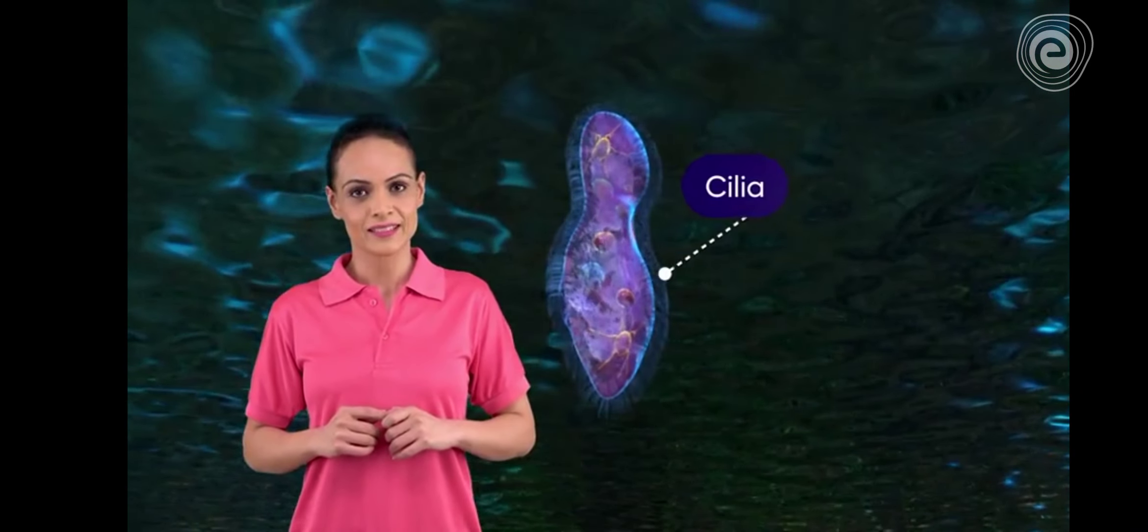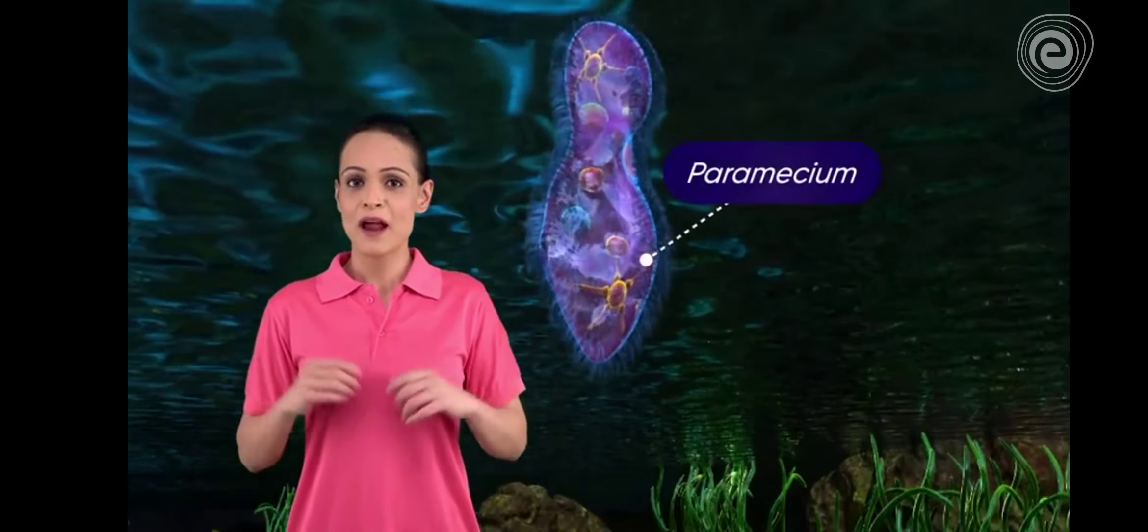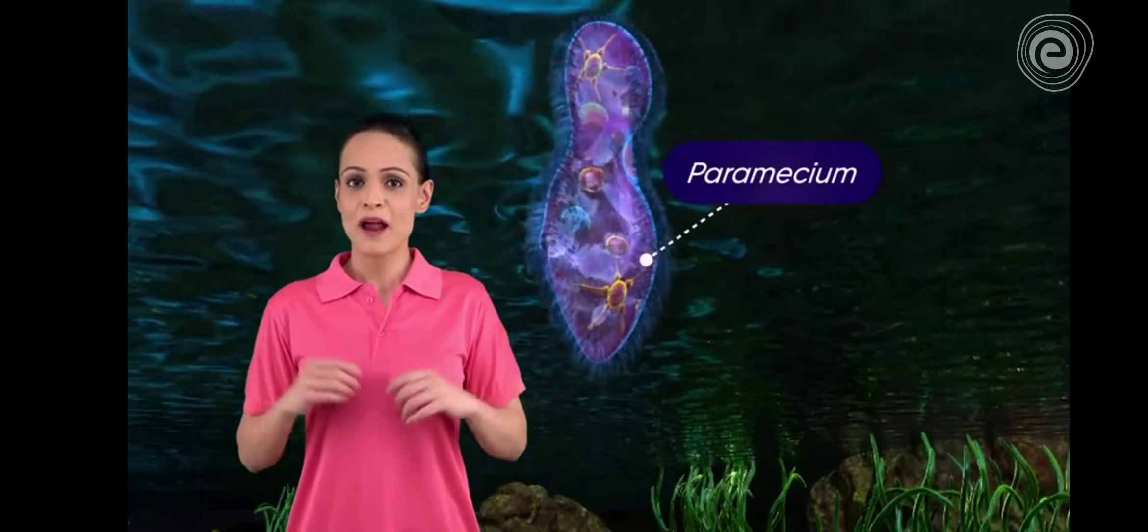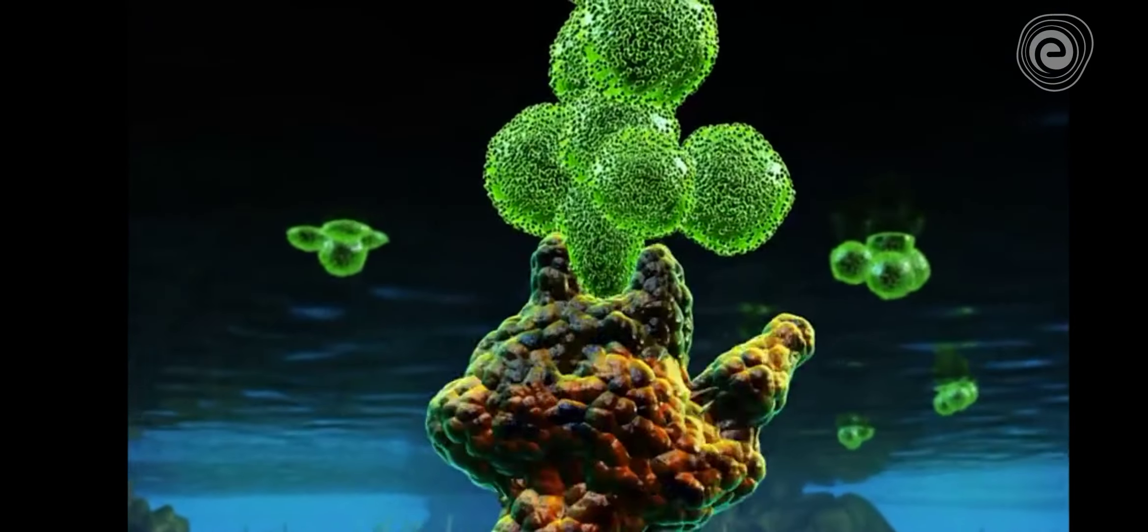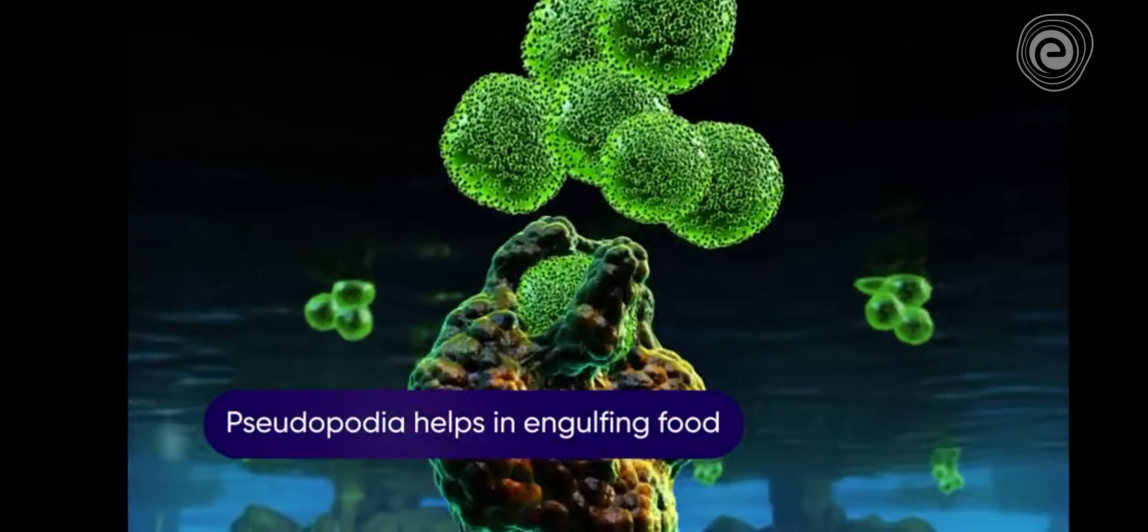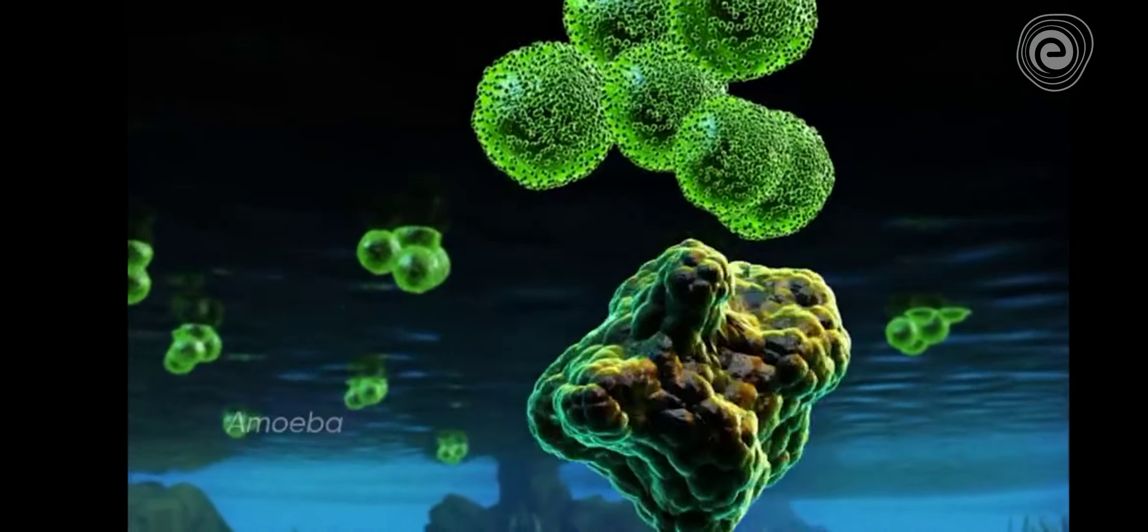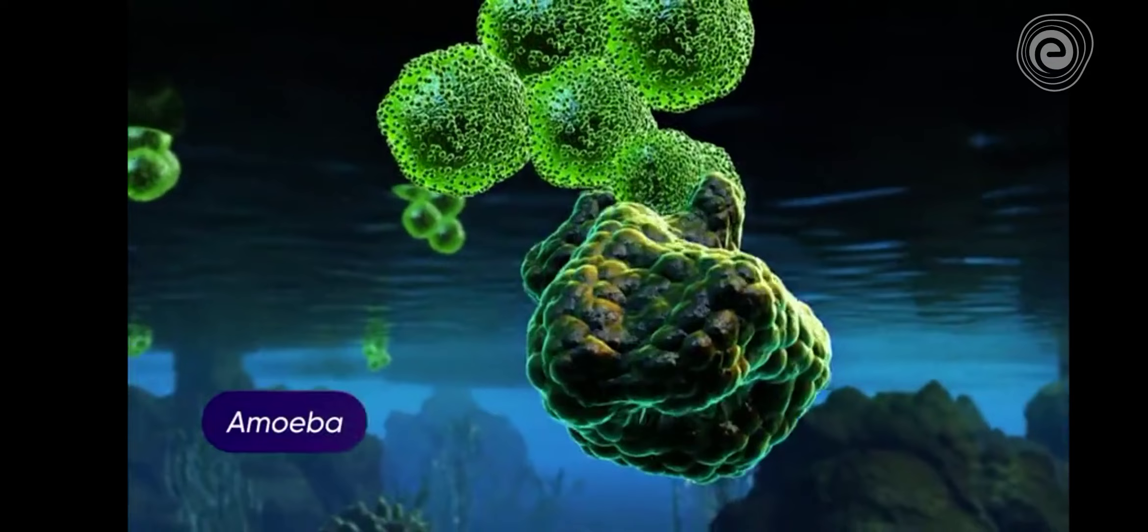Cilia: they are short and numerous. Paramecium is an example of a ciliated organism. Pseudopodia: they are also known as false feet and are the cellular extensions that help the organism in crawling along the surface. They also assist in trapping and engulfing of the food. Amoeba is an organism that forms pseudopodia.